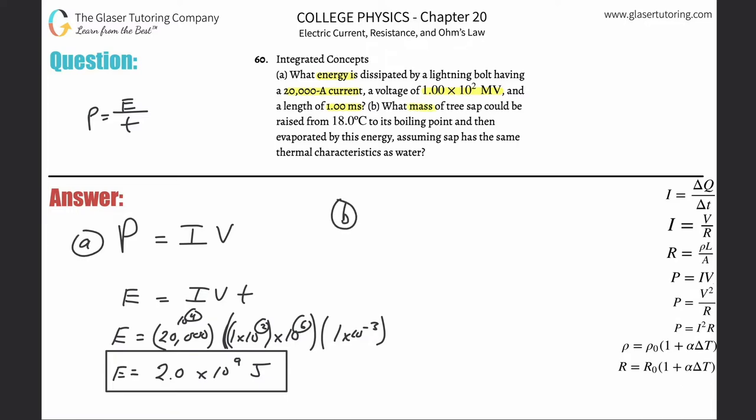So it says, what mass of tree sap could be raised from 18 degrees Celsius to its boiling point and then evaporated by this energy, assuming the sap has the same thermal characteristics as water. So this goes back to the chapter on thermal heat energy transfer. We're taking a certain mass of sap starting at 18 degrees Celsius. We're going to raise it to 100 degrees Celsius and then we have to evaporate it. So just to evaporate it at 100 degrees Celsius, this is vaporization. So it's basically a two part process.